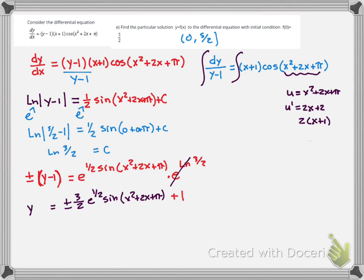Now we have to decide: was it the positive or negative root? We'll do that by plugging in our initial condition. When I plug 0 in for these x's, sine of pi is 0, so e to the 1 half of 0 is just e. When I have 1 plus 3 halves that gives me the 5 halves I need. 1 minus 3 halves wouldn't work, so I want the positive root.